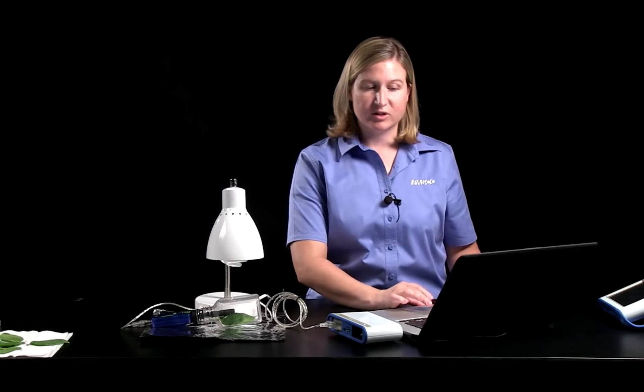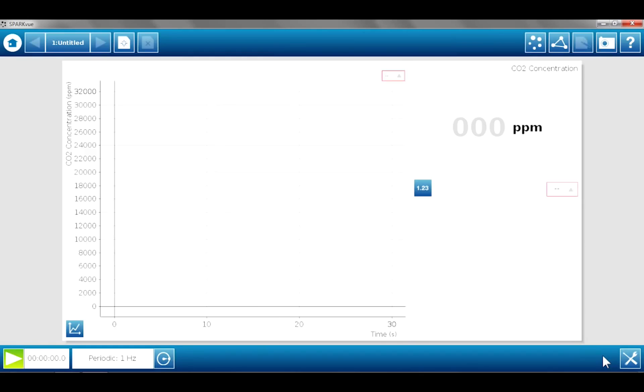But I also am interested in seeing a digits display of carbon dioxide concentration. So I'm also going to select the number button here. And that's going to give me a digits display. So we'll be able to see a graph and the parts per million in digits as the data is collected.